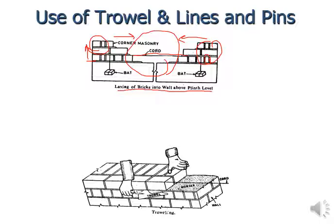Then you do the troweling. The cord is placed for horizontal alignment, mortar (cement-sand mix) is placed with the trowel, and it is leveled. Both placing and leveling can be done with the trowel.